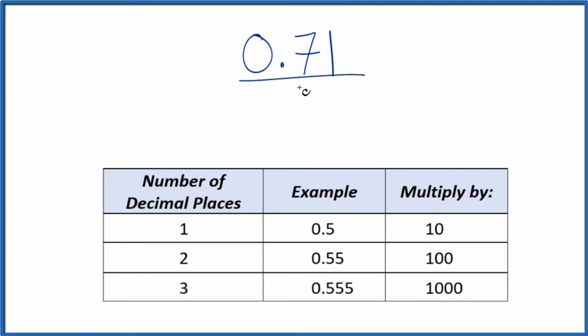Let's call this 0.71 over 1. We're just dividing by 1, so it's still 0.71, but now we have the start of a fraction.